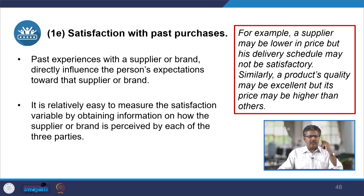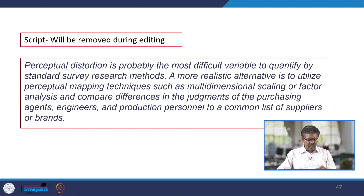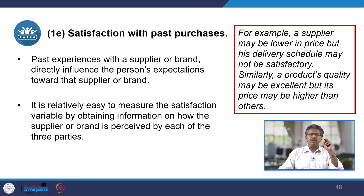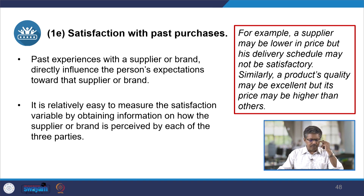The last point is satisfaction with past purchases — past experiences with a supplier or brand which may directly influence a person's expectations. For example, a company that has tried TVS Sundaram products and finds them of very high quality will have a halo effect on the brand. Being satisfied with past purchases, they would like to be more loyal and continue with the company. It is relatively easy to measure the satisfaction variable by obtaining information on how the supplier or brand is perceived by each of the three parties — agents, quality control, and users.